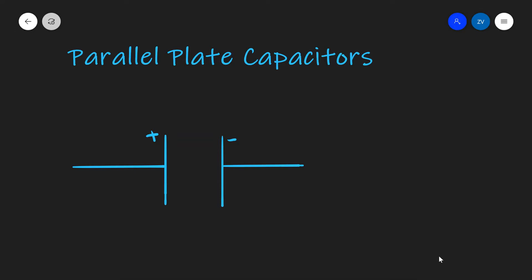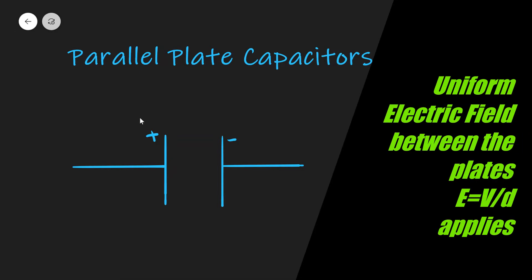A parallel plate capacitor is going to have one positive plate and one negative plate. There will be a uniform electric field between them.